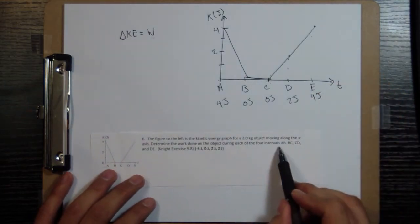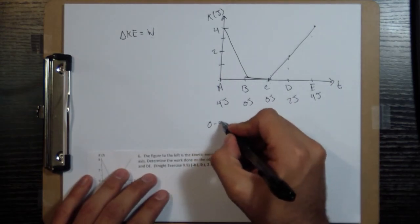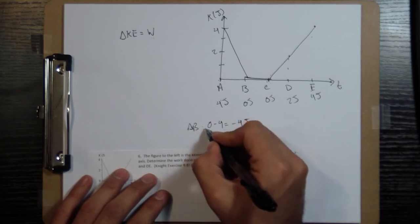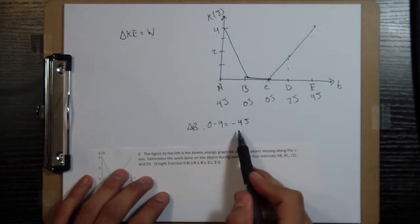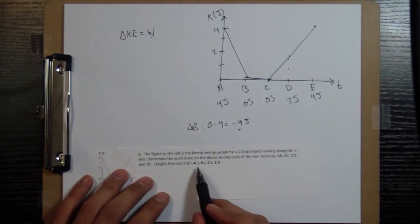So then, from B to A, we do final minus initial, zero minus four, and zero minus four is equal to negative four joules. So for our interval AB, that is our change in kinetic energy, and that's going to be what our work is. So we had negative four right there.